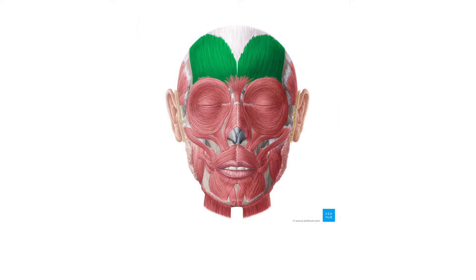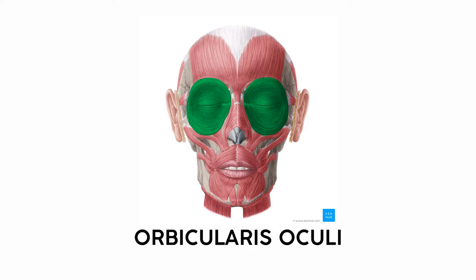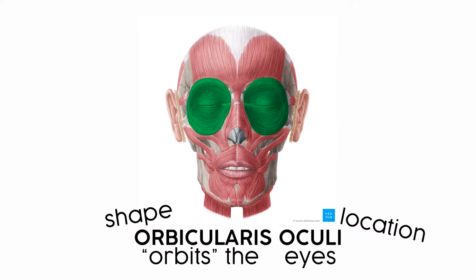Some muscles get their name from both their shape and location. That frontalis muscle actually inserts on another muscle, the orbicularis oculi, which I remember because it circles, or orbits, the eye, and allows you to close your eyelids. It's one of those muscle names that has both the shape and location built in, making it predictable to identify.